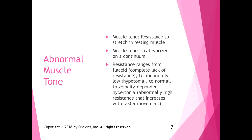Muscle tone is the resistance to stretch in a resting muscle, and abnormal muscle tone is categorized on a continuum. Resistance ranges from flaccid — a complete lack of resistance where the muscle feels rubbery — to abnormally low muscle tone, or hypotonia, then normal muscle tone, and finally velocity-dependent hypertonia, also known as spasticity, which is abnormally high resistance that increases with faster movement.